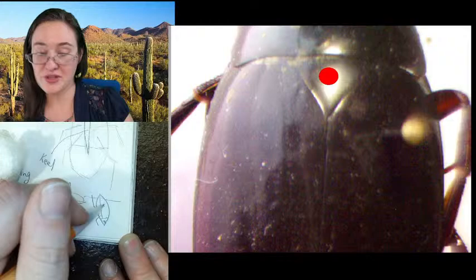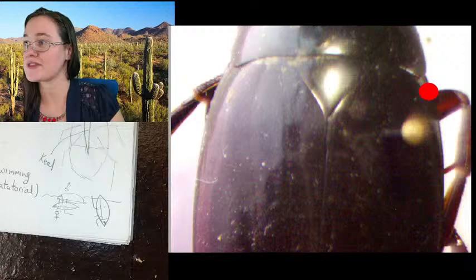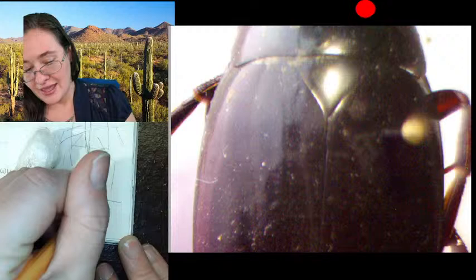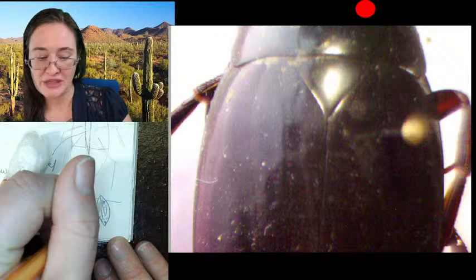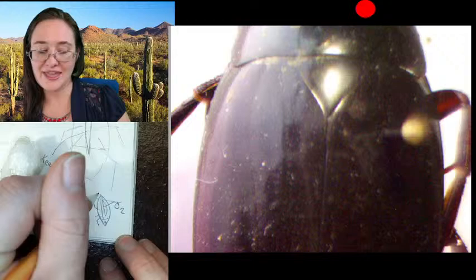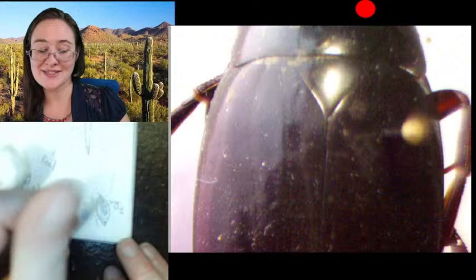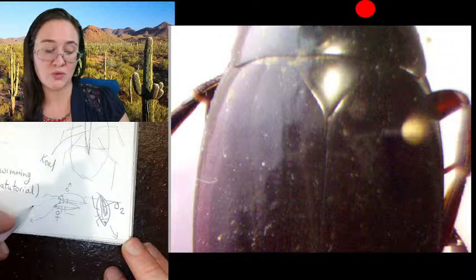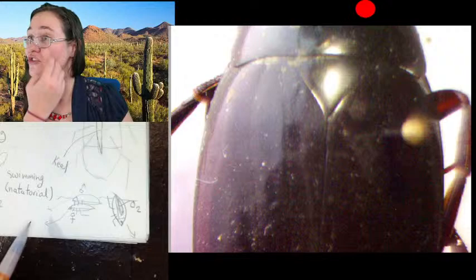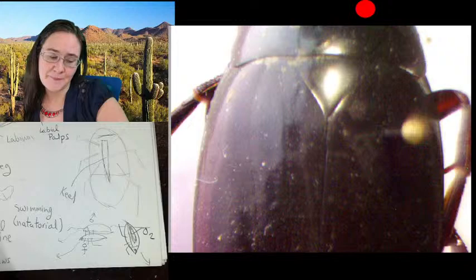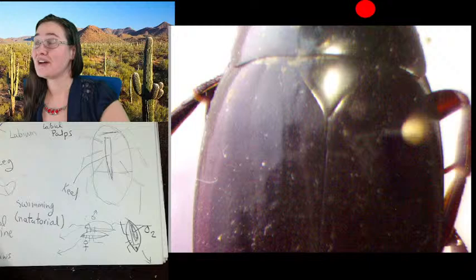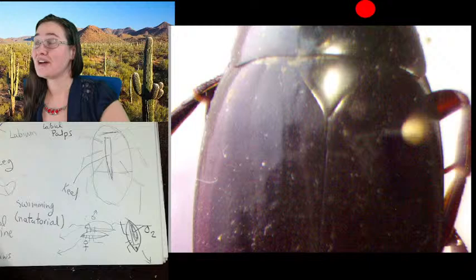This beetle's elytra — these hard wing shells right here, the left wing and right wing — actually have a cavity or open space underneath them that can store oxygen. They'll go up to the top of the water, get an air bubble, and hold that air bubble under their wings — that's what allows them to dive and swim underwater. They do need to be able to breach the surface to breathe. There are other insects that actually have gills and can breathe underwater for an indefinite amount of time, but that's not the case with these guys.